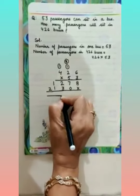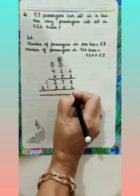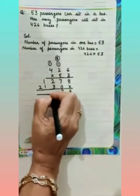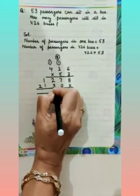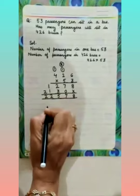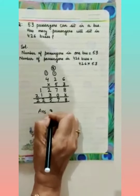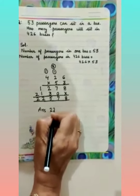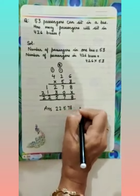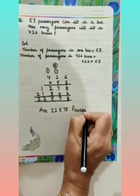When you do the addition, write the numbers one after the other. The answer is 22,578 passengers. Always write the answer clearly. Thank you children.